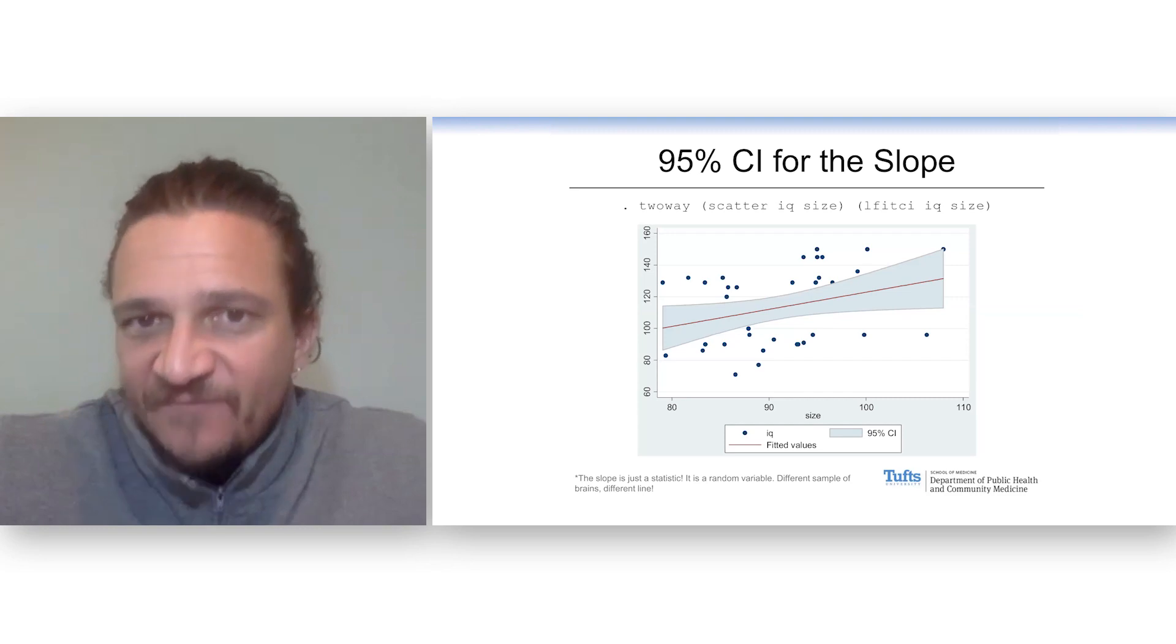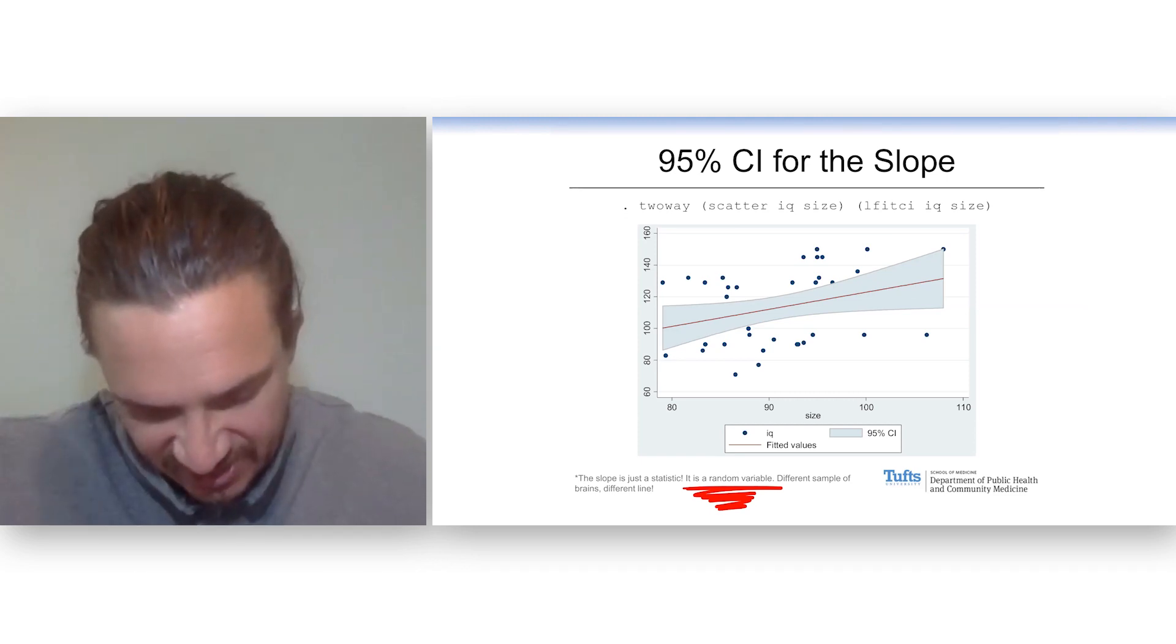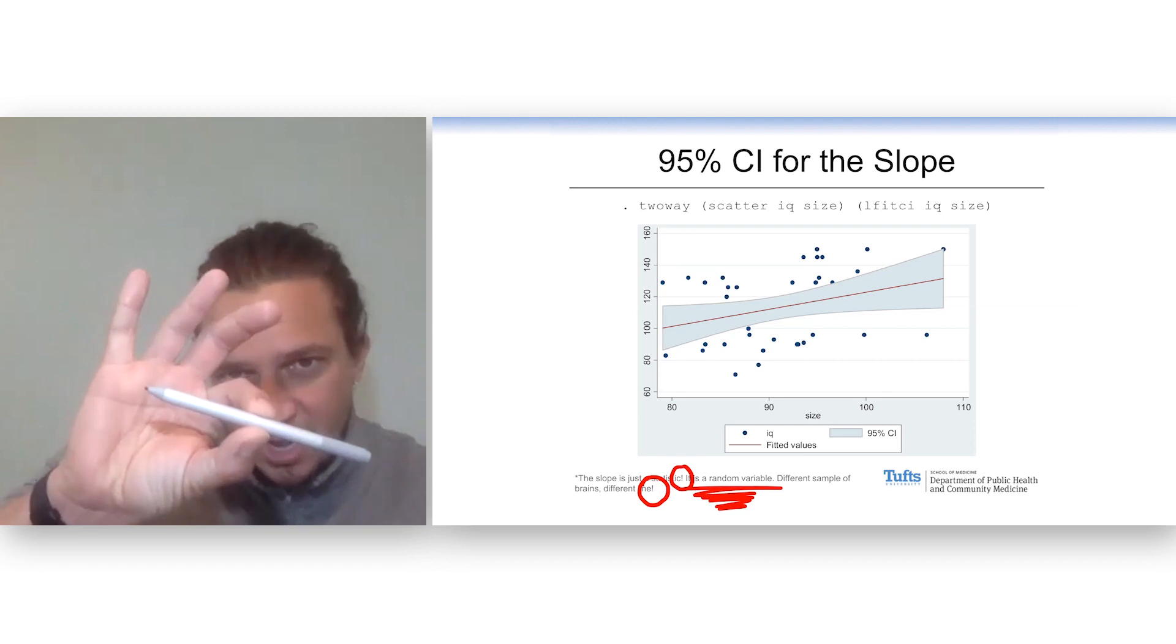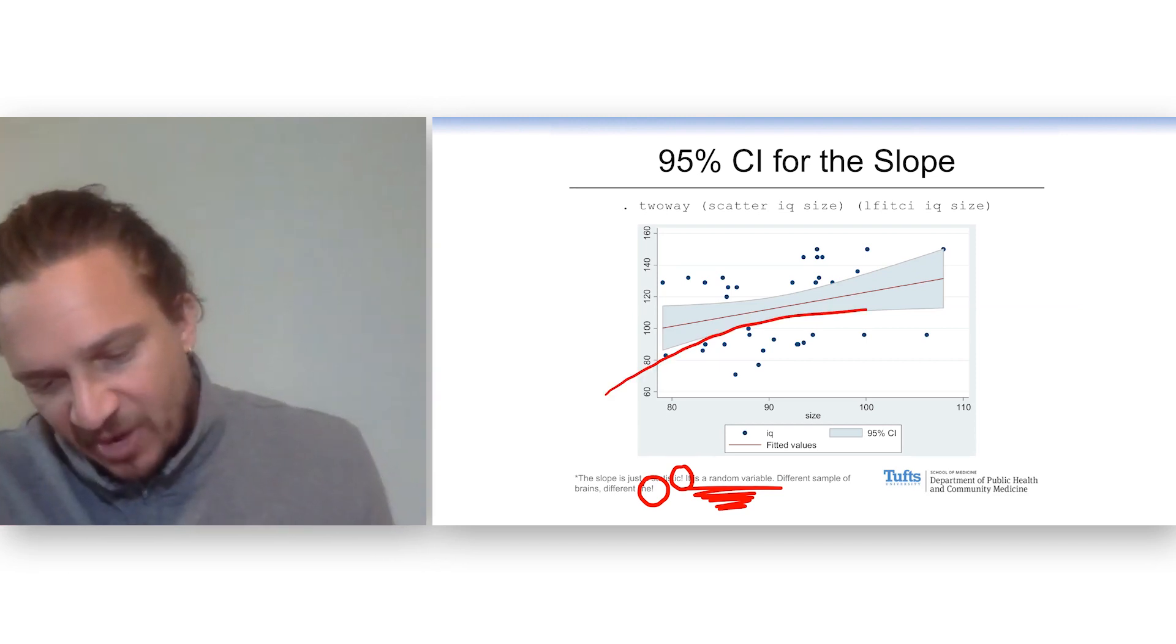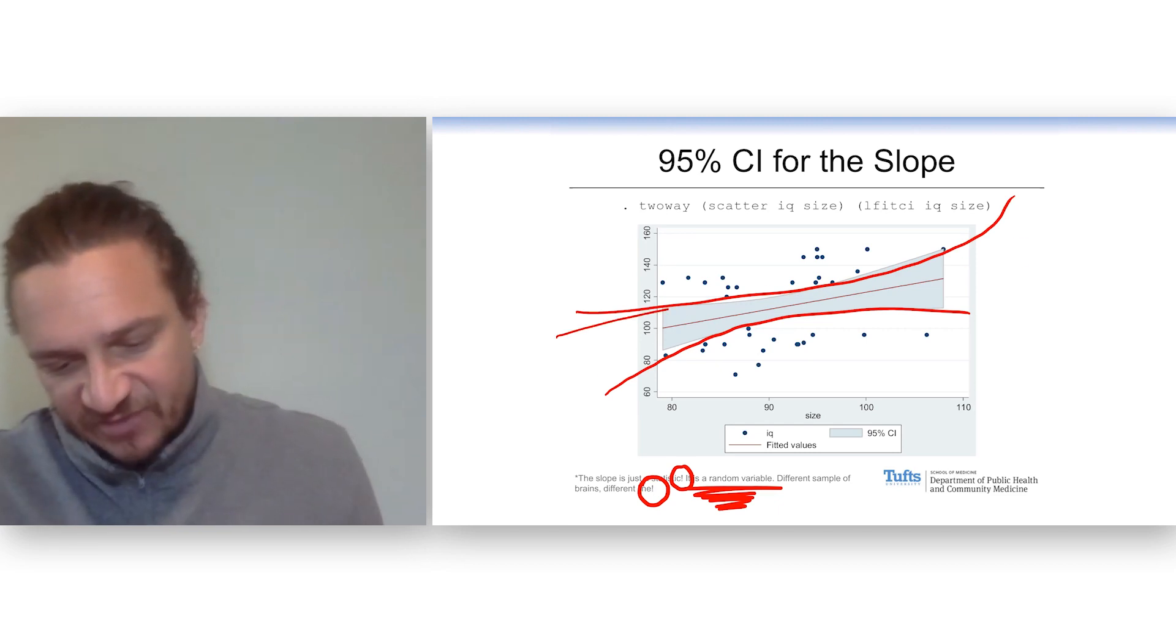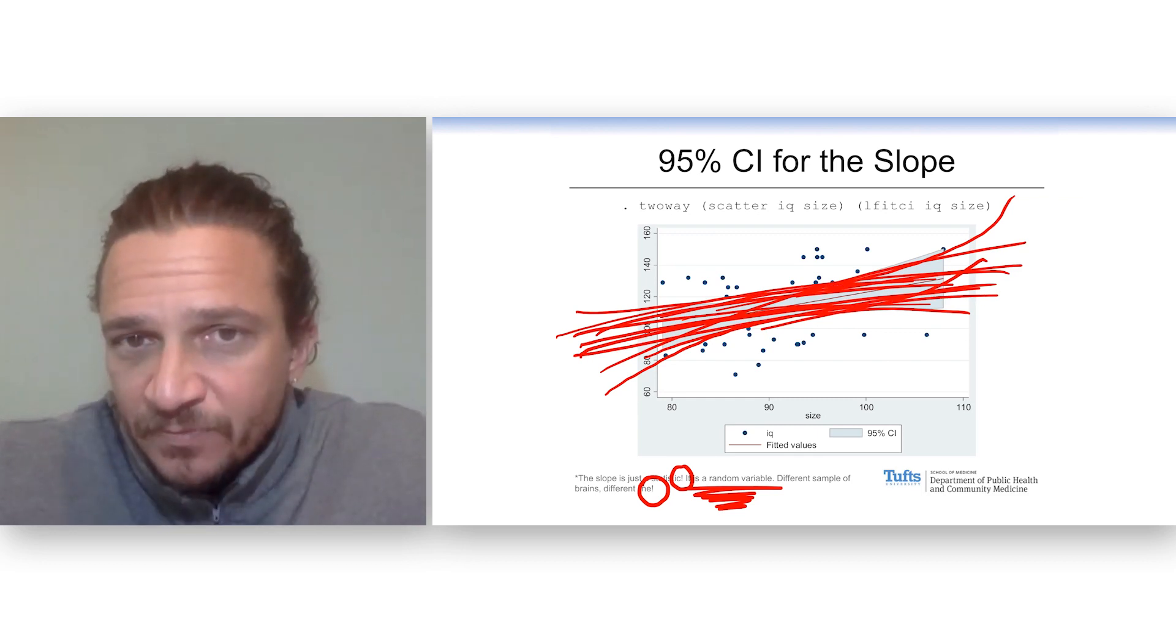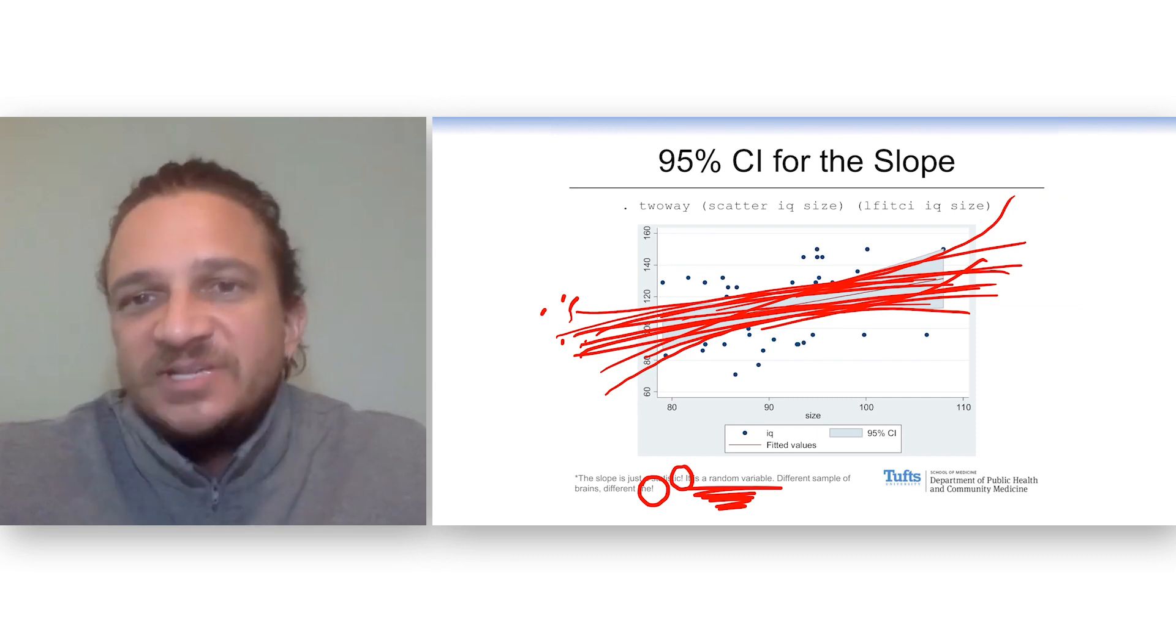Stata can make this cool little plot for us, which emphasizes that the slope is a random variable. It's a statistic. Had you taken different brains, you would have different points. And the line that you fit, it might be a little bit steeper or a little bit shallower. It would bounce around. It might be up a little higher or a little lower. And all of those possible lines, if you looked at 95% of those possible lines, they would end up making a shape something like this. You'd get a 95% CI for the slope. So our study is just randomly reaching in and grabbing one of those things. Now, if you look at that CI, you notice that those bounds, that shaded area, doesn't include the flat line. It's statistically significant.